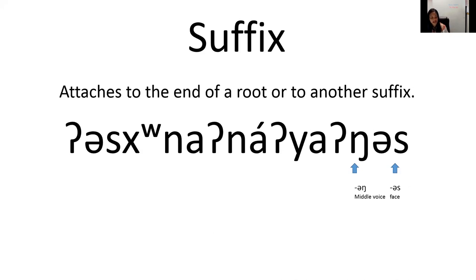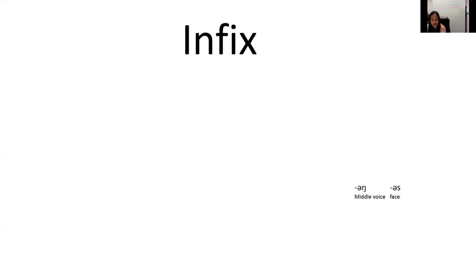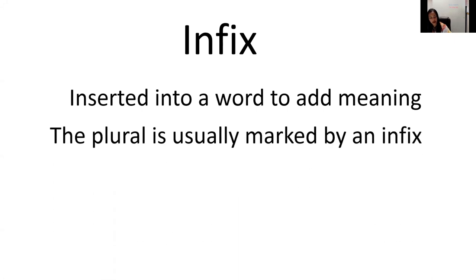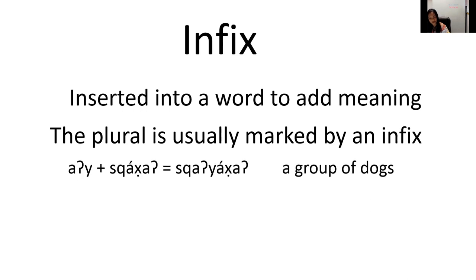In addition to prefixes and suffixes, Klallam has two other types of meaning units: infixes and reduplication. An infix is inserted into a word to add meaning. The plural is usually marked by an infix — for example, inserting 'in' into 'skaha' for dog gives 'skaha,' meaning a group of dogs.